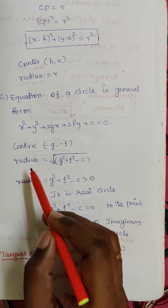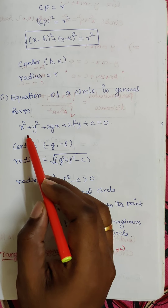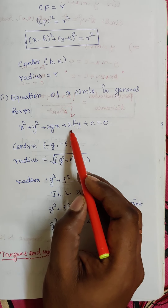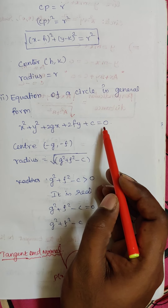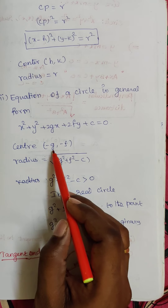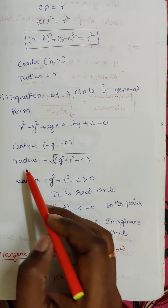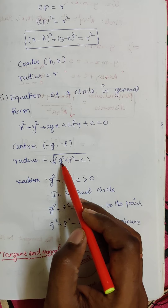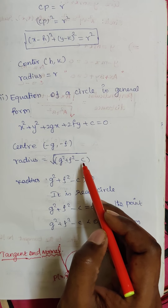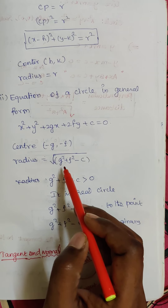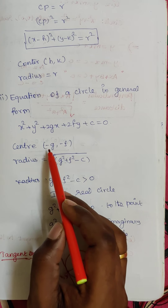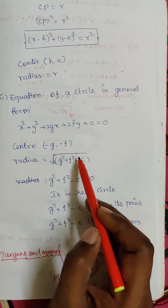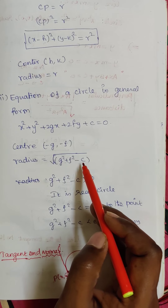Listen carefully. The general equation of a circle is x squared plus y squared plus 2gx plus 2fy plus c equals 0. The center is (−g, −f) and the radius is the square root of g squared plus f squared minus c.